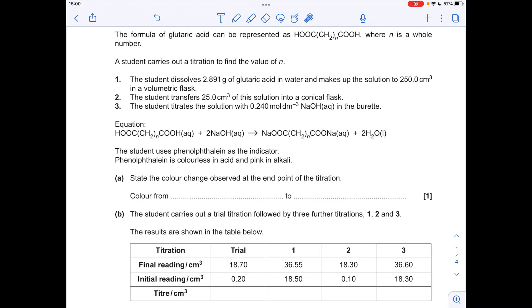So part A, the colour change. Remember we said the acid was in the flask to start with, the sodium hydroxide is added, so it's going to start off as colourless because phenolphthalein is colourless in acid. When all of the acid's been neutralised and you get that drop of alkali with nothing to react with, it's going to go pink. So it's a colourless to pink colour change.